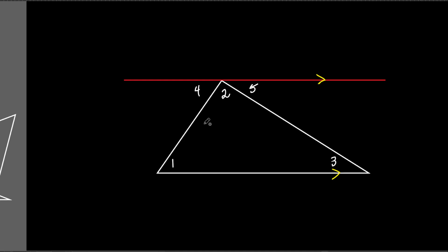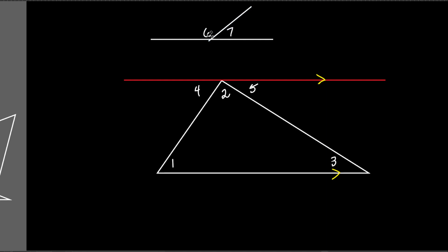Here are angles one, two, and three in the triangle, plus angles four and five at the top along the parallel line. What I'm doing right now is showing you a proof. I'm trying to show that angles one, two, and three add up to 180. What else do we know adds up to 180? A straight line. Any angles that form a straight line add up to 180. So angles four, two, and five form that straight line and add up to 180.